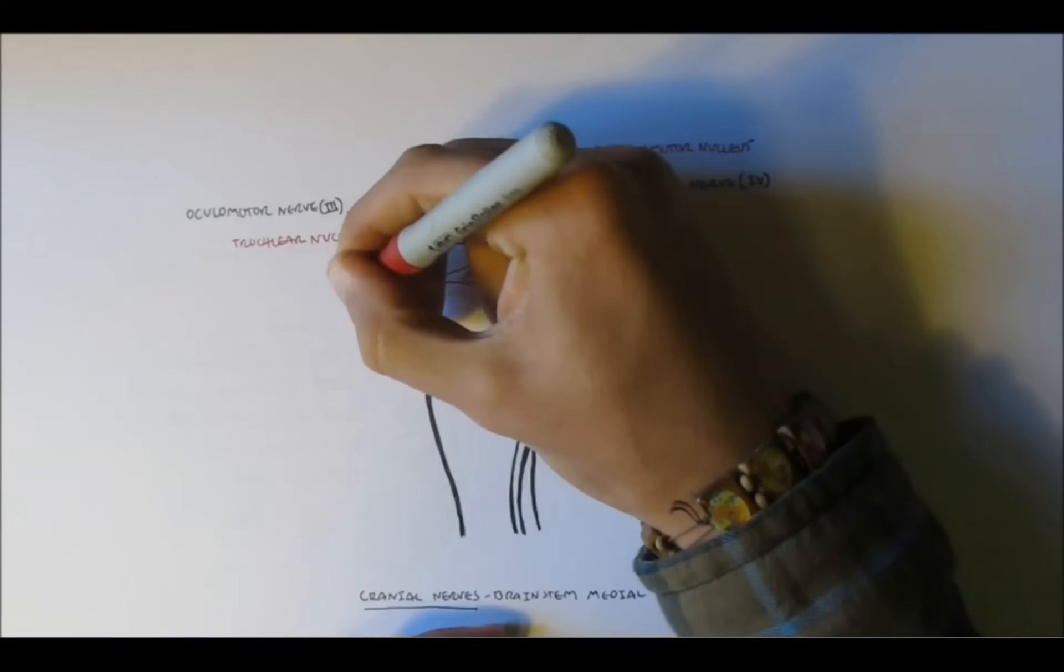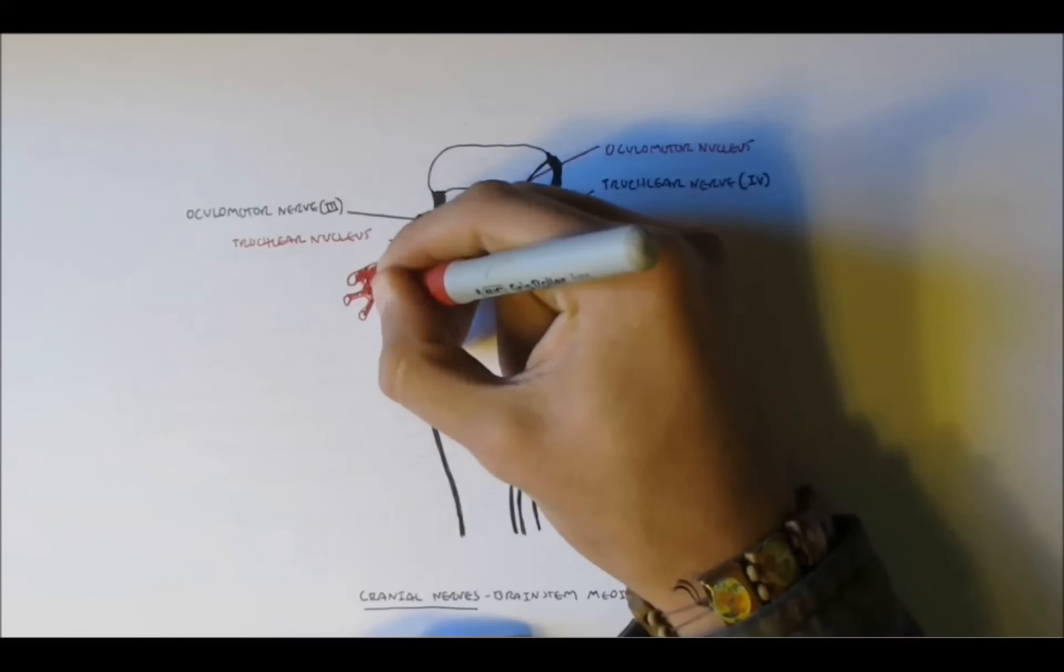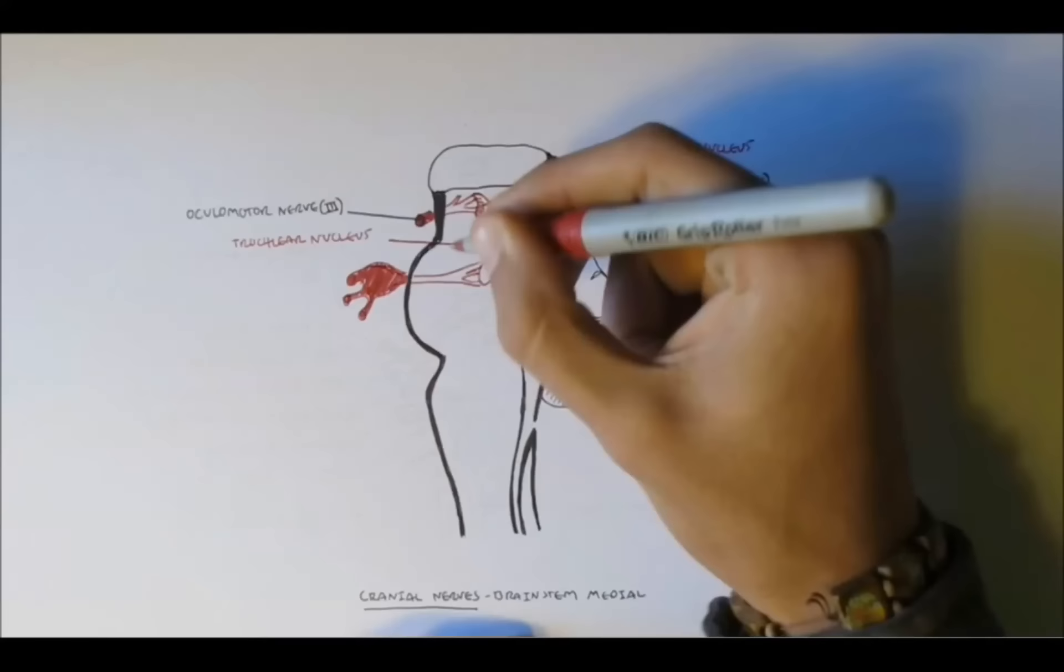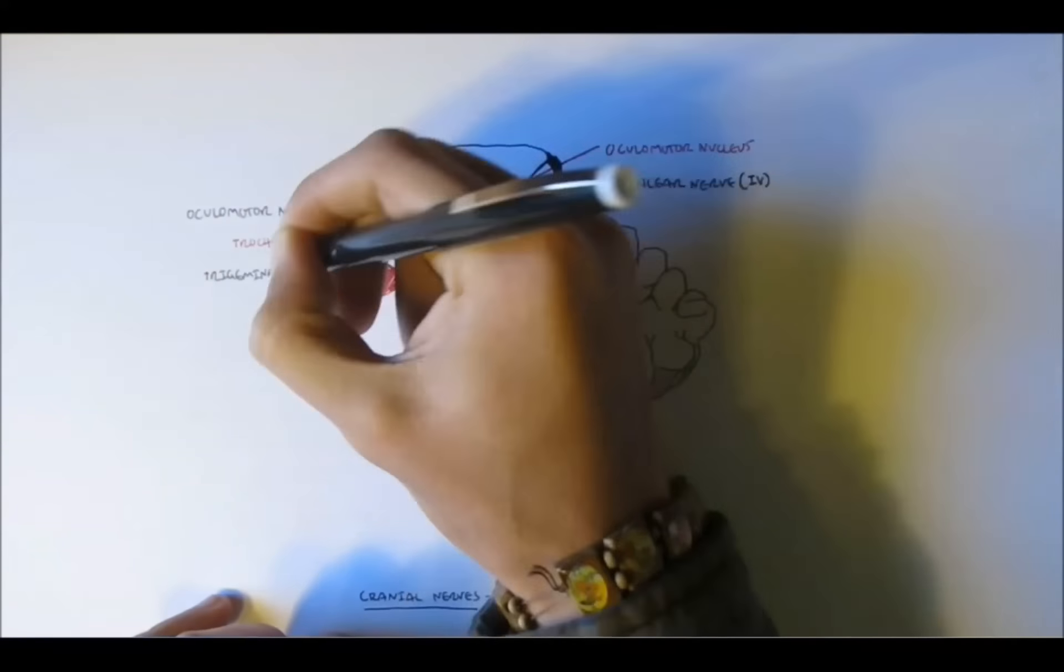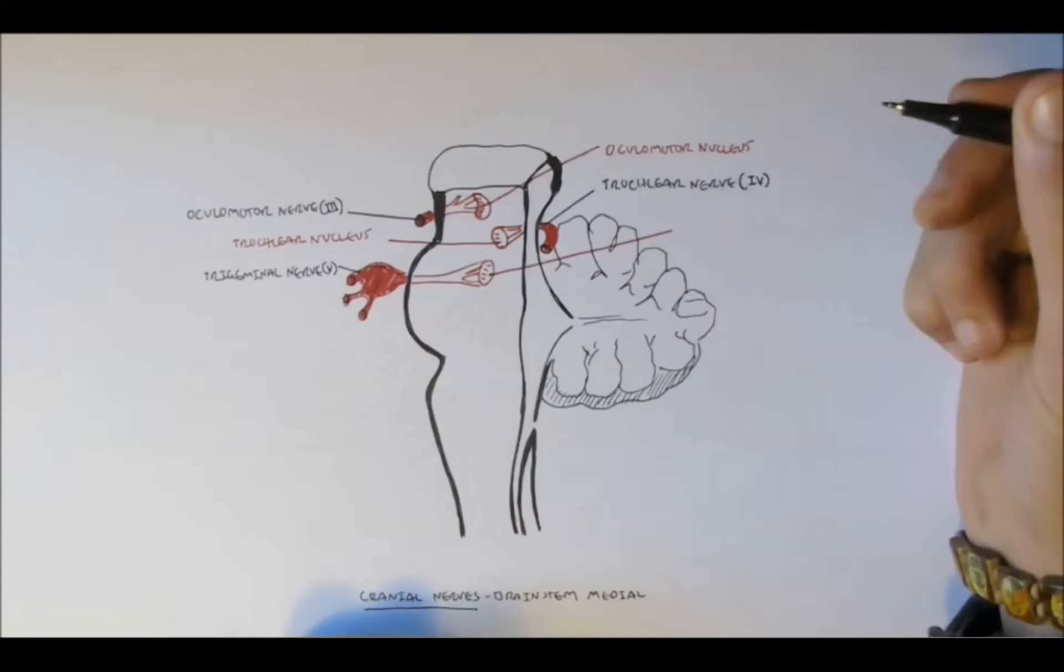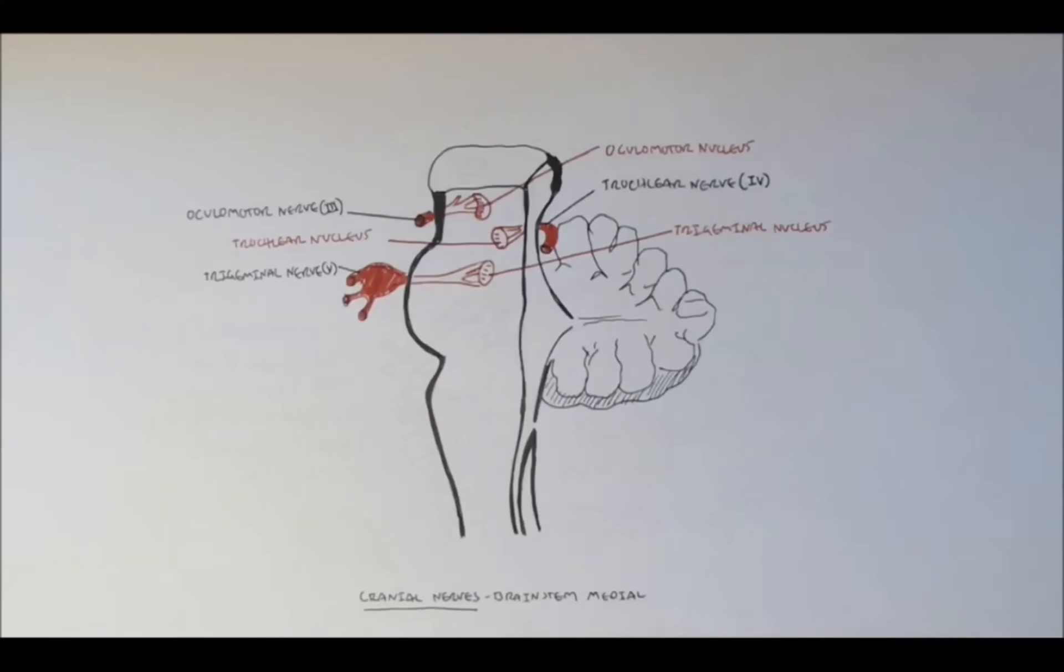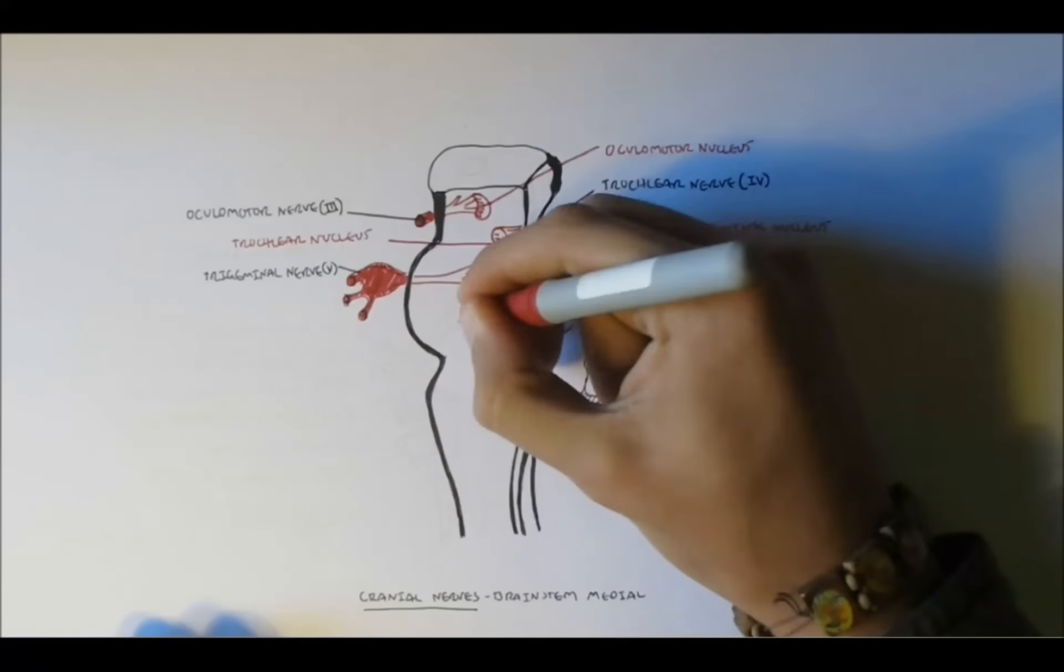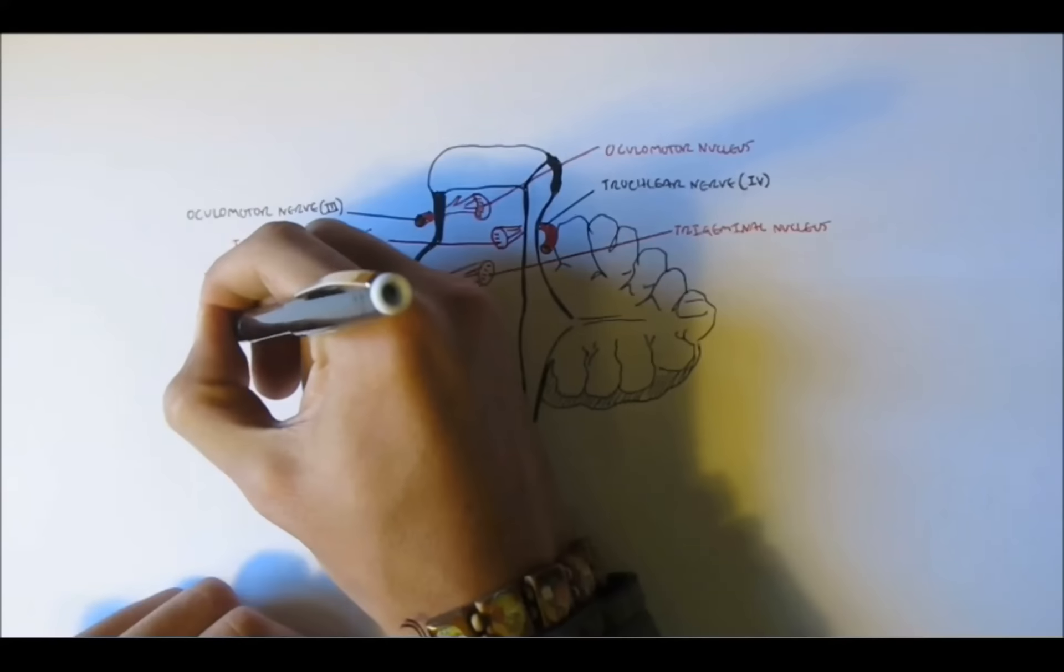Nerve 5, which is just where the pons is beginning, is the trigeminal nerve. And the nucleus is referred to as the trigeminal nucleus. Now I'm not drawing up the sensory and motor nerves, I'm just drawing where all the nerves are roughly located, just to let you know.